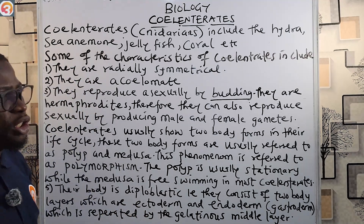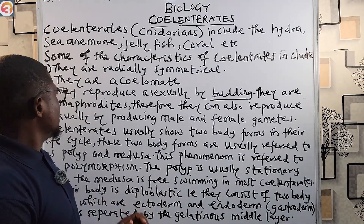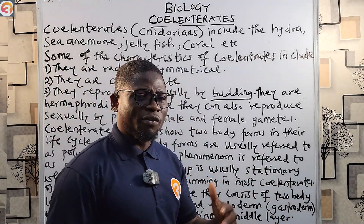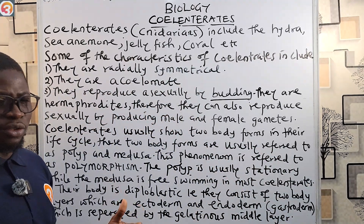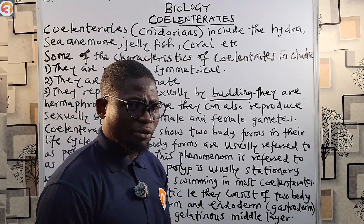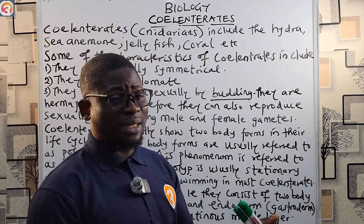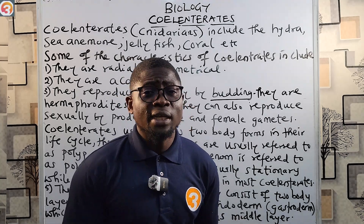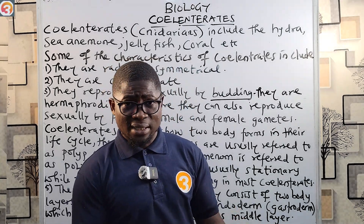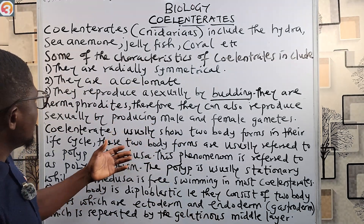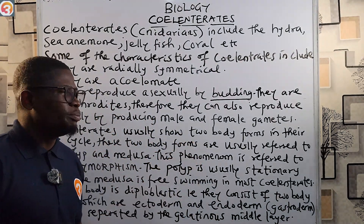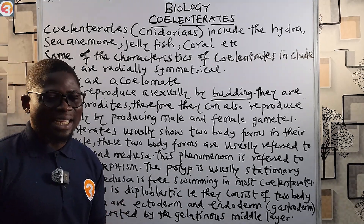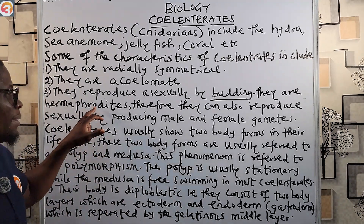They reproduce asexually by budding — take note of that. They also reproduce sexually. They are hermaphrodites, meaning they have both male and female sex organs. Because they are hermaphrodites, they can reproduce sexually by producing both male and female gametes.